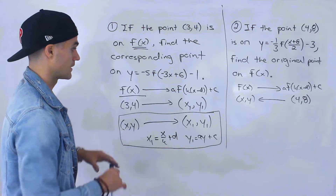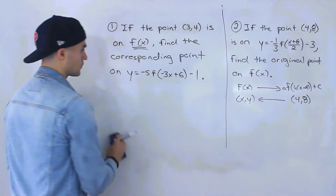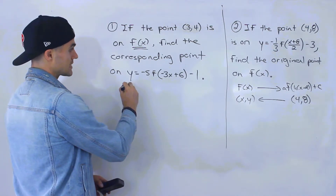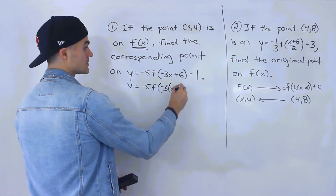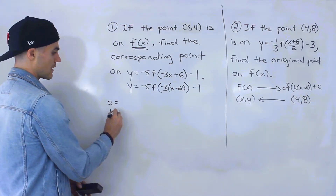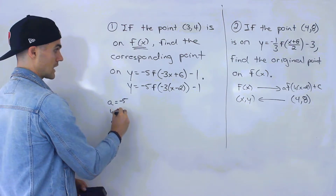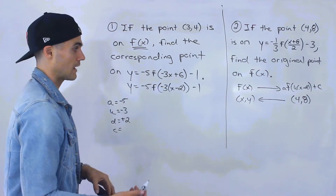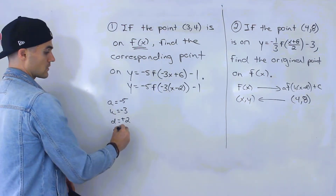For problem one, the first thing we need to do is identify the transformation values: a, k, d, and c. We need to factor out the negative 3 to get k by itself, which leaves x minus 2 inside the bracket, and minus 1 outside. So the a value is negative 5, the k value is negative 3, the d value is positive 2 — if you didn't factor out k you might have put negative 6, but that's wrong — and the c value is negative 1.